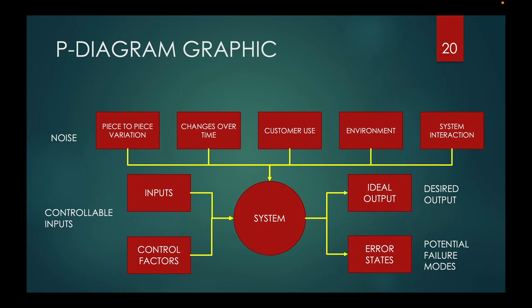The P-diagram depicts the controllable input signals of the system. It describes the required energy sources, any control factors, and these are things that can be changed in the design. It also depicts part or component factors, such as stiffness or hardness.